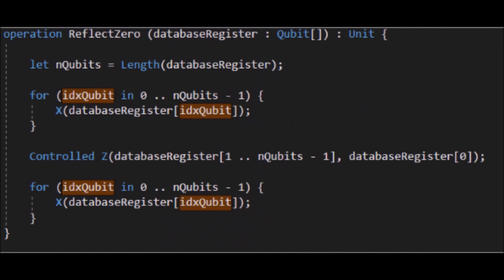In the code, I'm again setting a length to the register, then applying an X gate, then the controlled Z gate, which is the phase shift, then another X gate. In function, the X gates do the same thing as the Hadamard gates in the circuit representation.